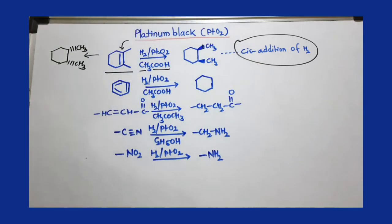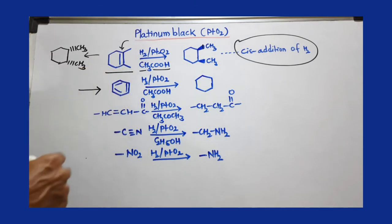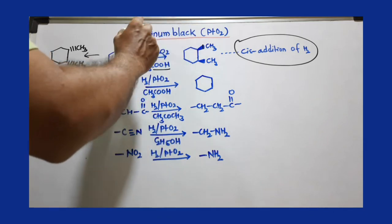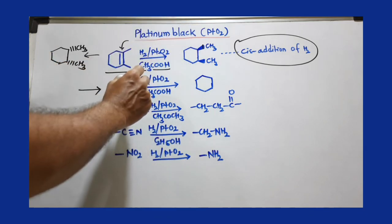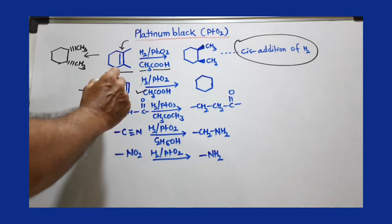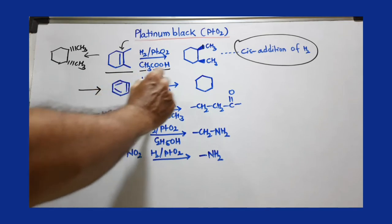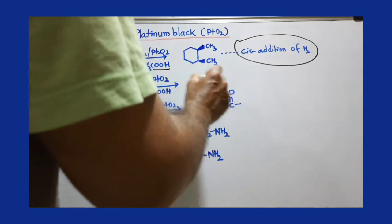Now you can reduce the benzene ring by using Adam's catalyst or platinum black, using H2 and PtO2 in presence of acetic acid. Three molecules of H2 are added and benzene is converted to cyclohexane. In this way you can convert benzene into cyclohexane.